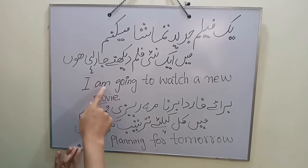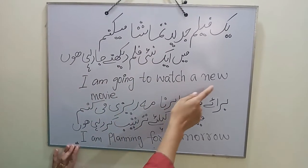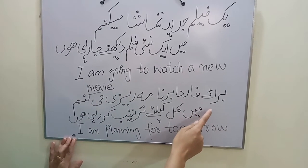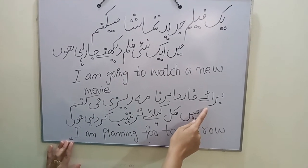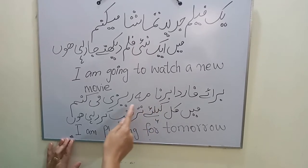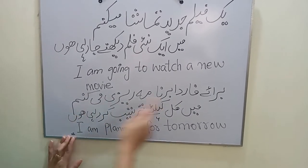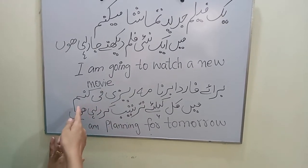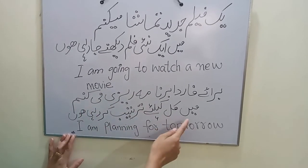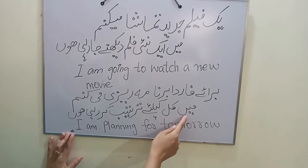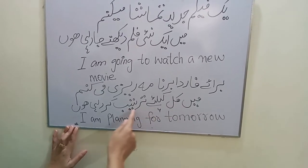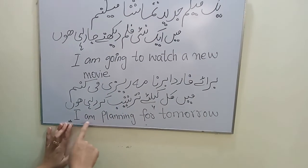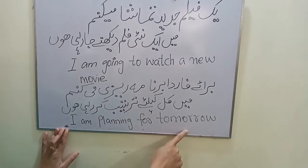I am going to watch a new movie. Next sentence in Persian: Baraj farda barnamerezi me konam — in Urdu: main kal ke liye tarteeb kar rahi hoon — and in English: I am planning for tomorrow.